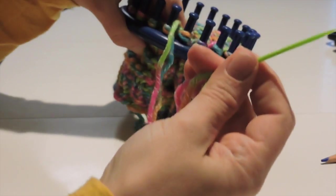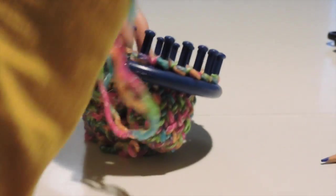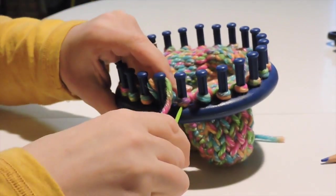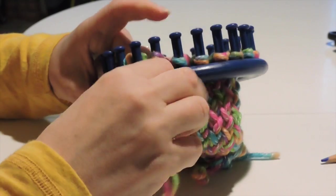The next part we're going to do is binding off. I don't do it any special way. I just take the yarn, wrap it around the loom about one and a half times and thread my tapestry needle.